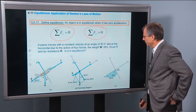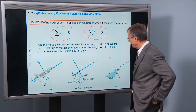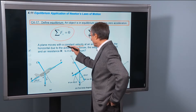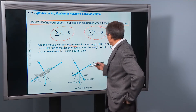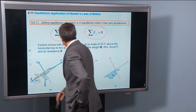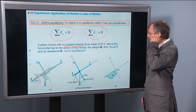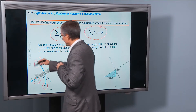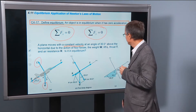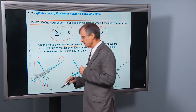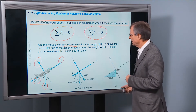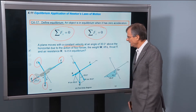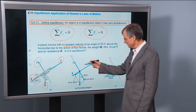A plane moves with constant velocity at an angle of 30 degrees above the horizontal, due to the action of four forces: the weight, the lift (which is perpendicular to the surface of the wings), the thrust (the action of the engines pushing it forward), and the air resistance R. Is it in equilibrium? Here's all the forces — it's complicated. Free body diagram.